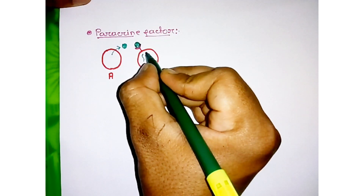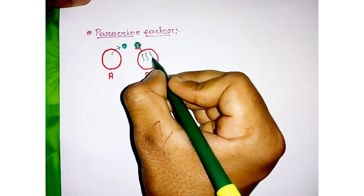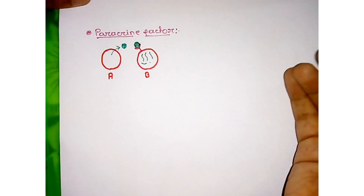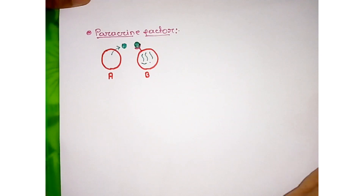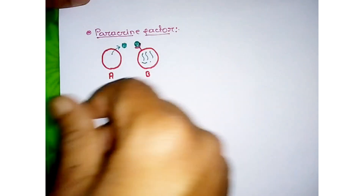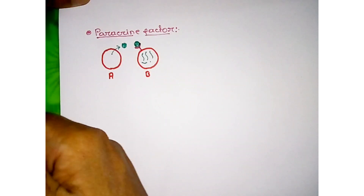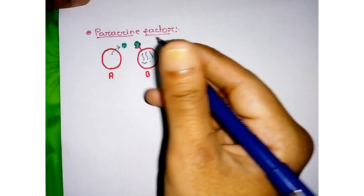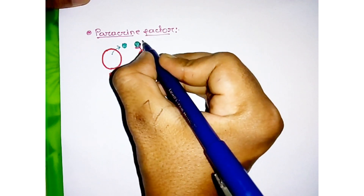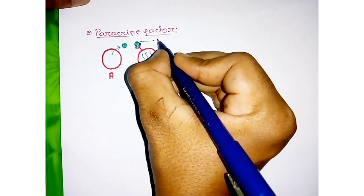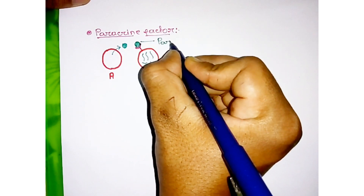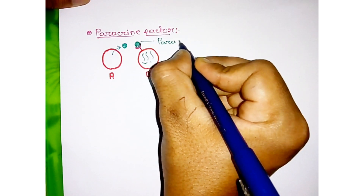There are some changes in the B cell — some physiological changes, some activities change. This factor is known as paracrine factor.